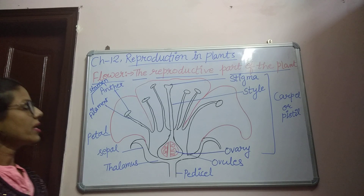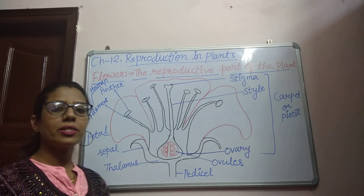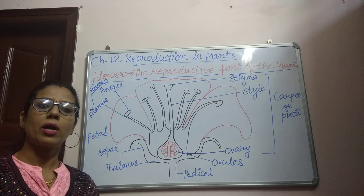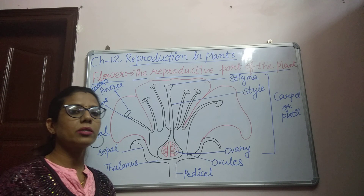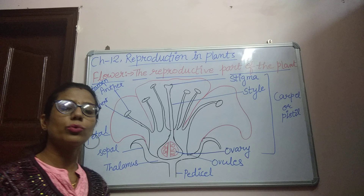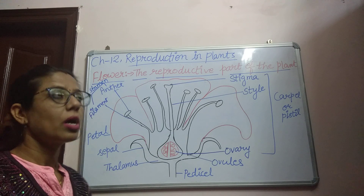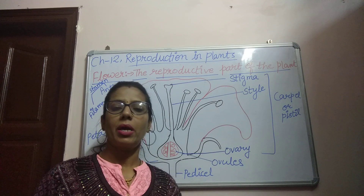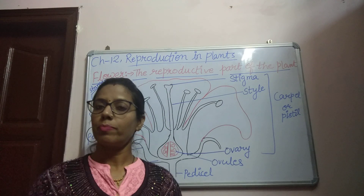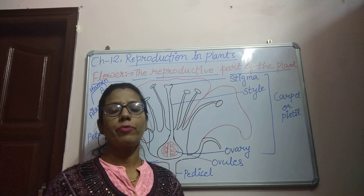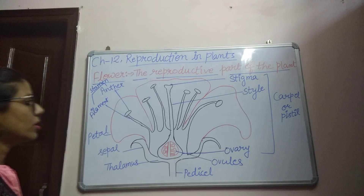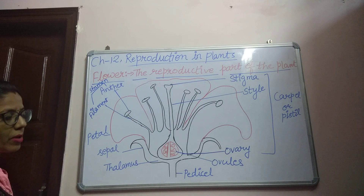Our next topic is the flower. The flower is the reproductive part of a plant and it takes part in sexual reproduction, because it contains both male and female reproductive parts. Now we will read about the structure of the flower.